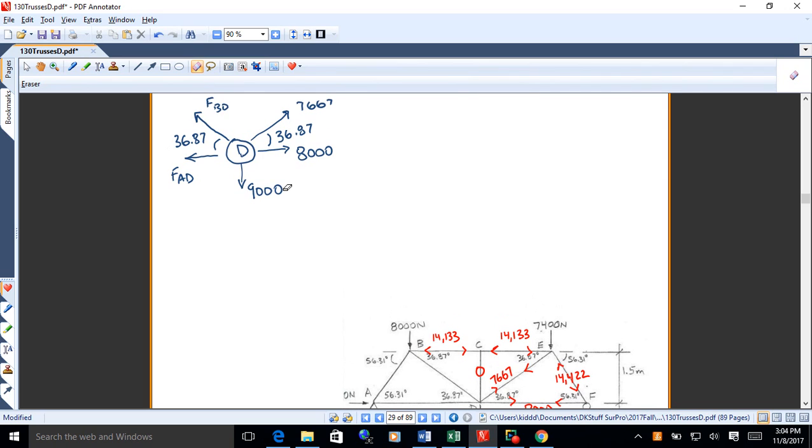And then I've got the 9,000 pulling down. And it looks like I'm assuming both AD and BD are in tension. They're both pulling, FAD is horizontal, BD is up into the left. All right, so there's the free body diagram.